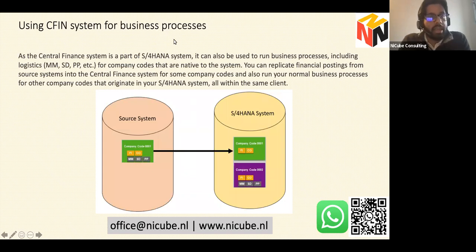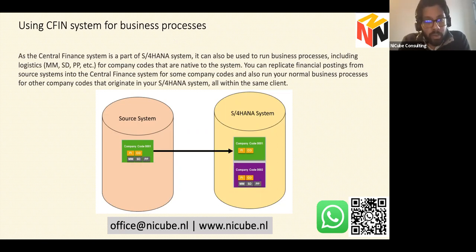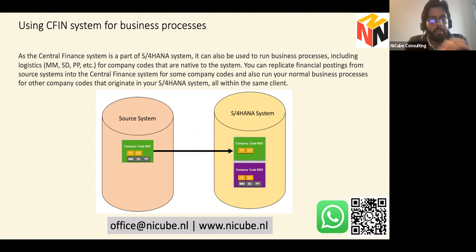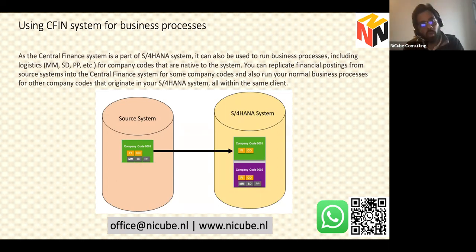CFIN can also be used alongside live business processes. For example, with two ECC systems replicating to S4HANA, you can also configure a new company code (0002) in S4HANA for full end-to-end logistics — FICO, MM, SD, PP — while company code 0001 still does logistics in ECC but has financial data in the central S4 system. CFIN is not a limitation; you can run full S4HANA finance and logistics processes alongside replicated company codes.